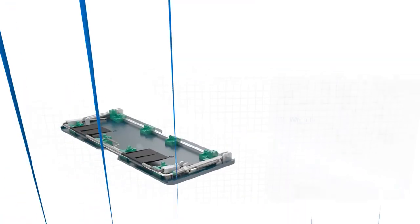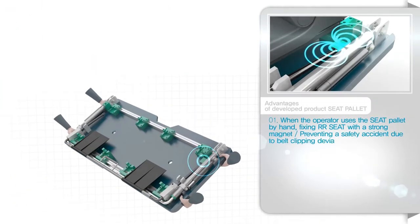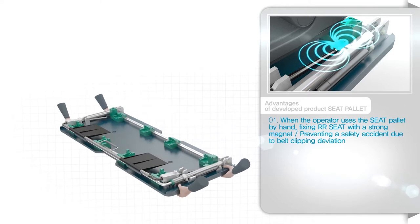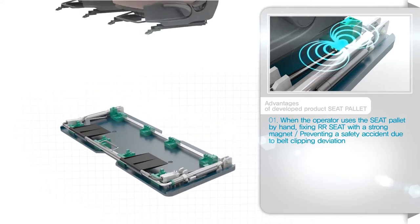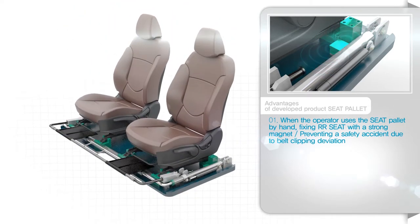In order to prevent RR seat fixation device deviation when the operator transports the seat pallet, a magnetic block was installed to prevent safety accidents.